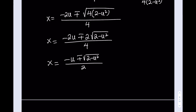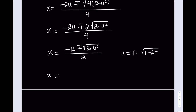Now we're going to back-substitute, replacing u with what it is. u was equal to r minus √(1 − 2r). We'll split into the minus and plus versions and decide which one is valid — I'll tell you one of them doesn't work, and I'll give you the reason. I want to go with the positive one first.